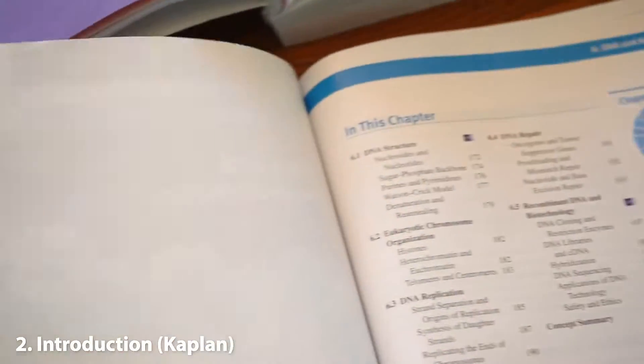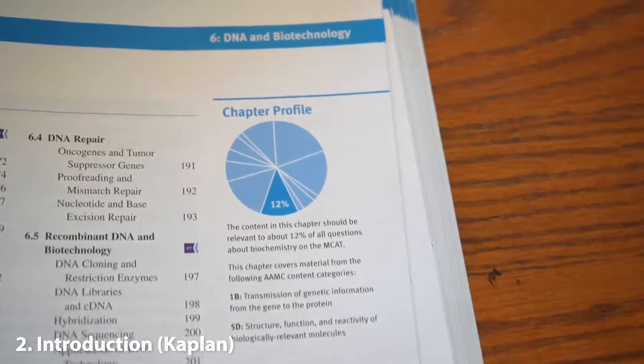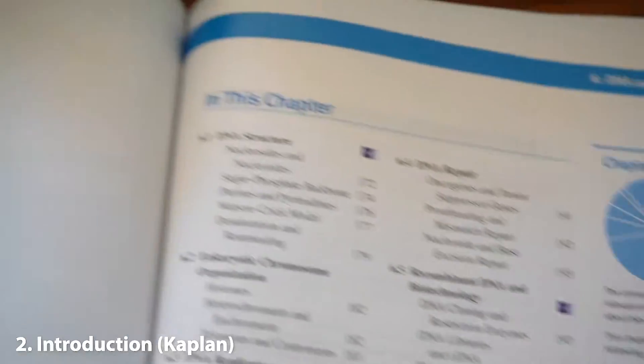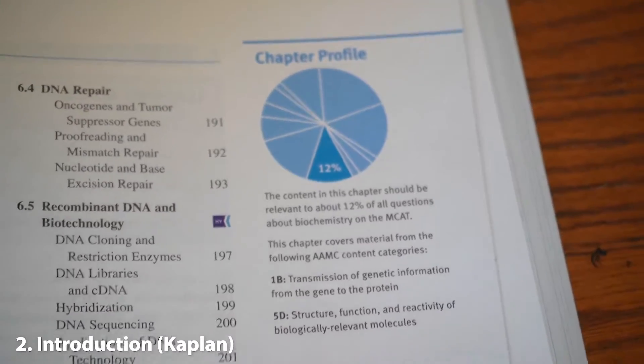With Kaplan, each chapter gets its own little glossary. You also get this little pie chart. So let's say you finish this chapter, you know you're done with 12% of biochemistry.